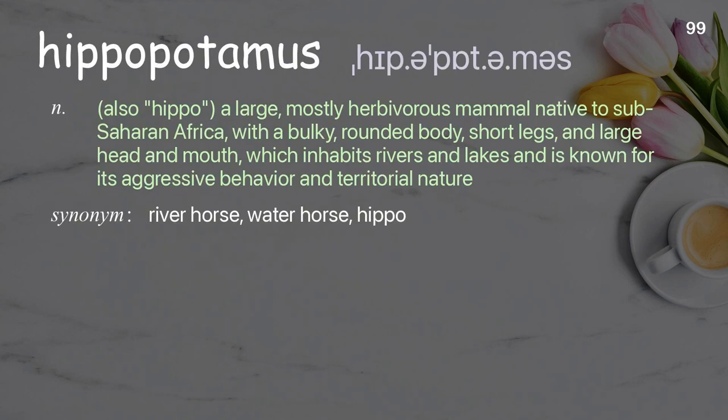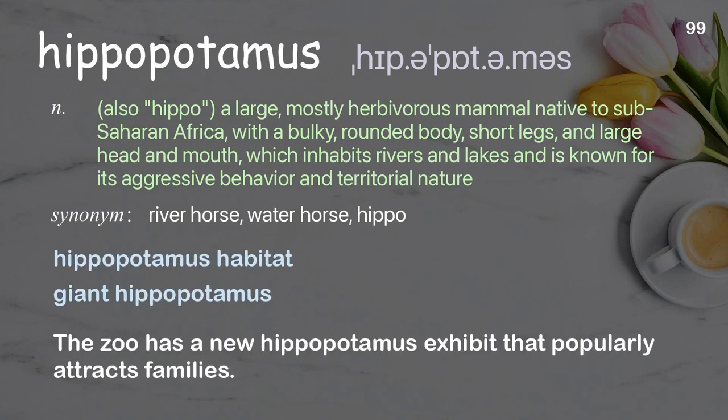Hippopotamus (also hippo): a large, mostly herbivorous mammal native to sub-Saharan Africa, with a bulky, rounded body, short legs, and large head and mouth, which inhabits rivers and lakes and is known for its aggressive behavior and territorial nature. Examples: hippopotamus habitat, giant hippopotamus. The zoo has a new hippopotamus exhibit that popularly attracts families.